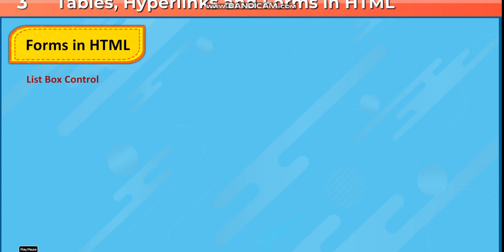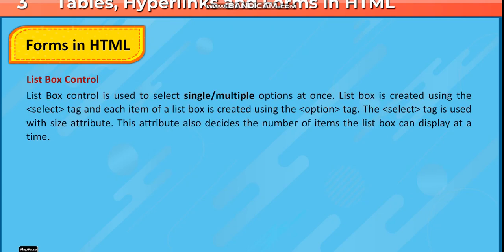List box control: A list box control is used to select single or multiple options at once. The list box is created using the select tag, and each item of a list box is created using the option tag. The select tag is used with the size attribute, which decides the number of items the list box can display at a time.